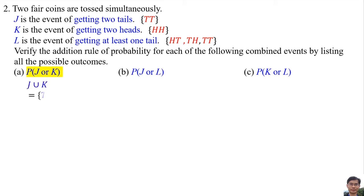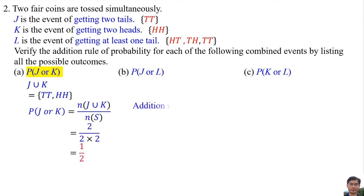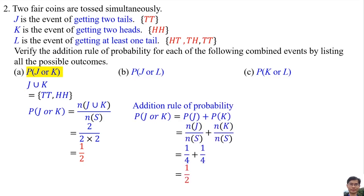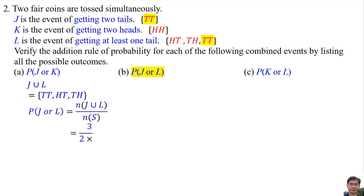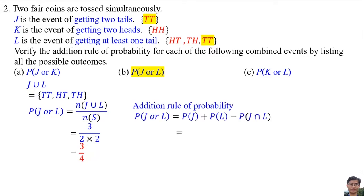The probability of J or K: J has element TT and K has element HH, with no common elements. The probability of J or K is 1/2. The addition rule of probability also gives 1/2. For the probability of J or L, the common element for J and L is TT. J or L is J union L, with elements TT, HT, and TH.